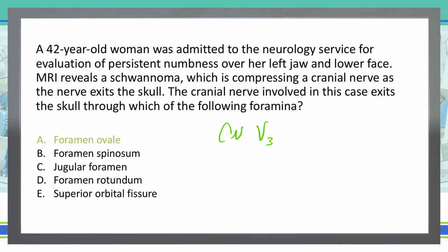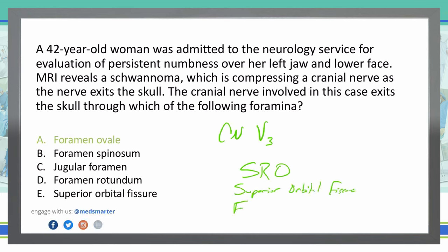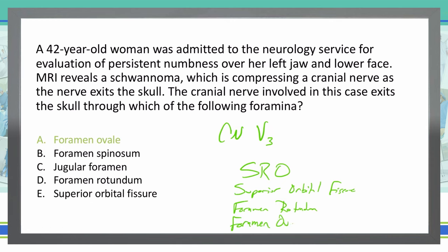You have to know the mnemonic that has to do with the different nerve divisions as they exit the skull, which is standing room only. S is superior orbital fissure, R is foramen rotundum, and O is foramen ovale.